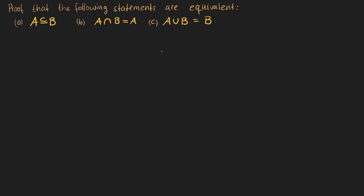For this exercise we have been given three different statements: A is a subset of B; the intersection of A and B is A; and the union of A and B is B. Now we need to show that all three statements are equivalent.